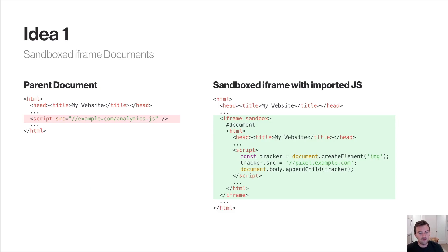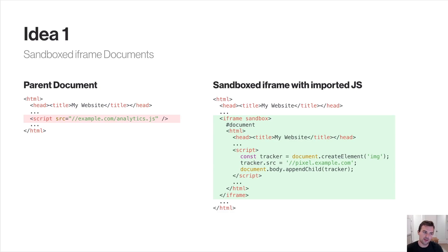We went through a few ideas. Initially, we sandboxed every script in its own lockdown iframe with a copy of the current document. This lockdown sandbox iframe can't make any network requests. So on the left-hand side, when we see a script import, we actually create a sandbox iframe and import that JavaScript there so it can run — but no network requests can be made.